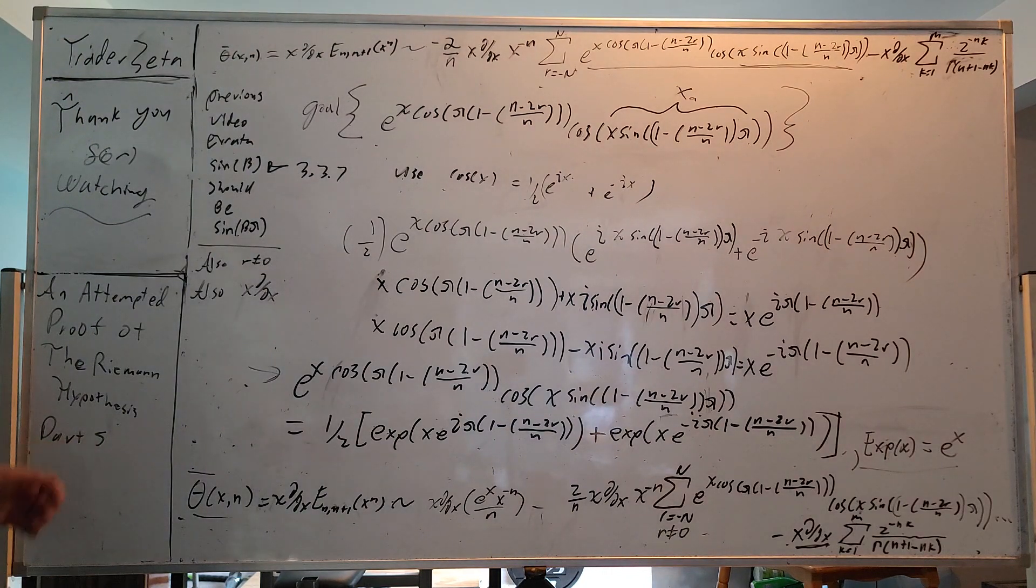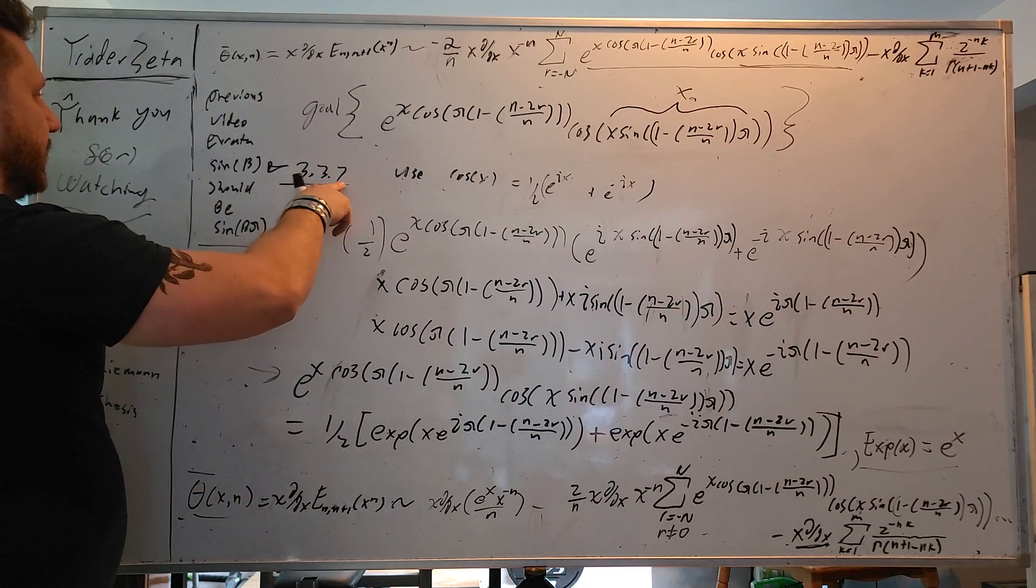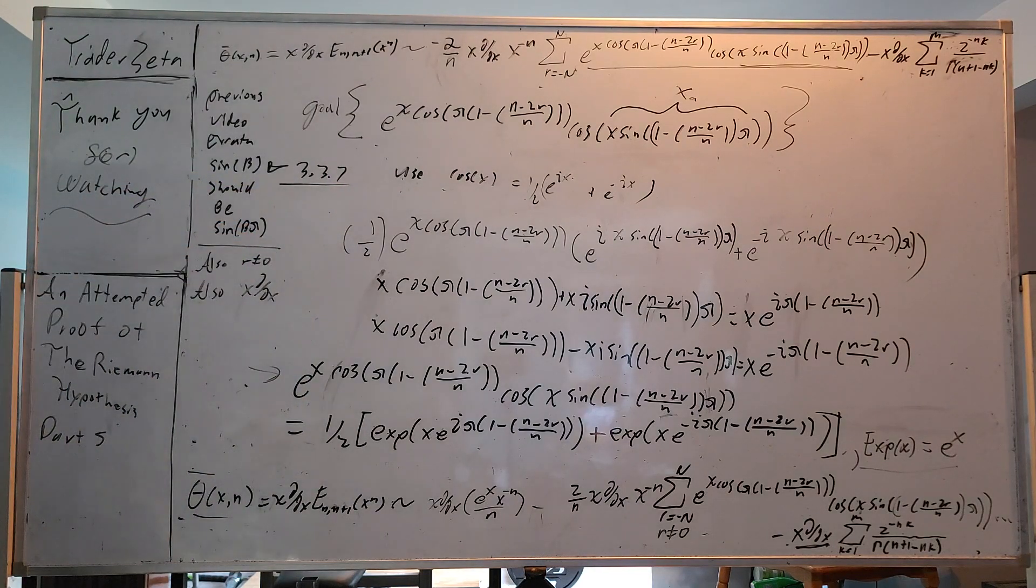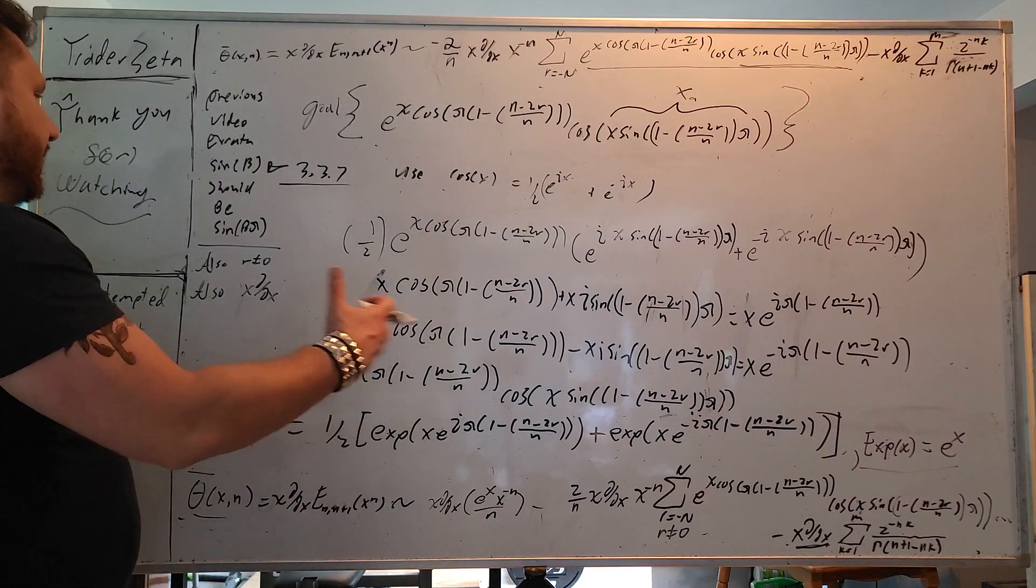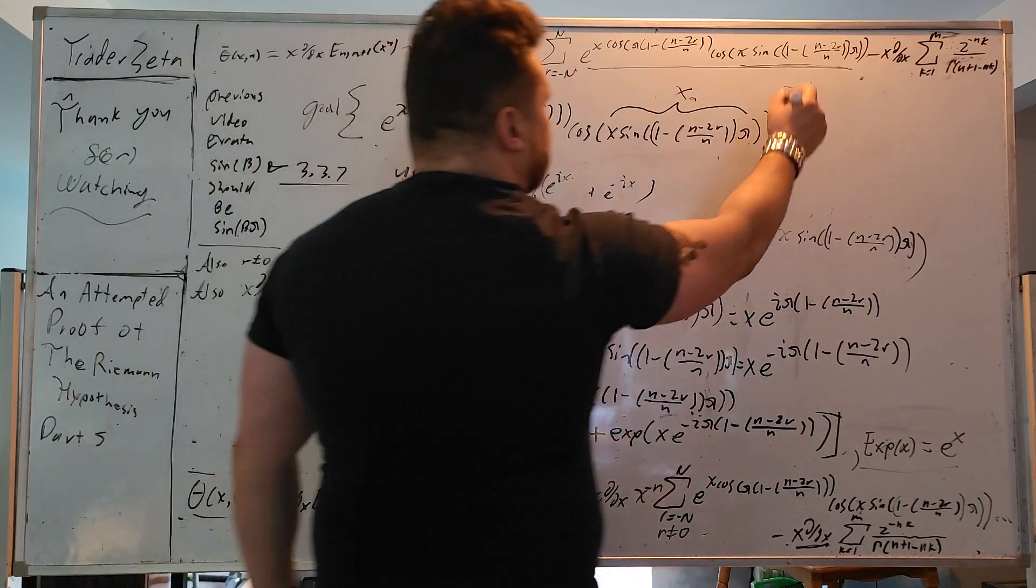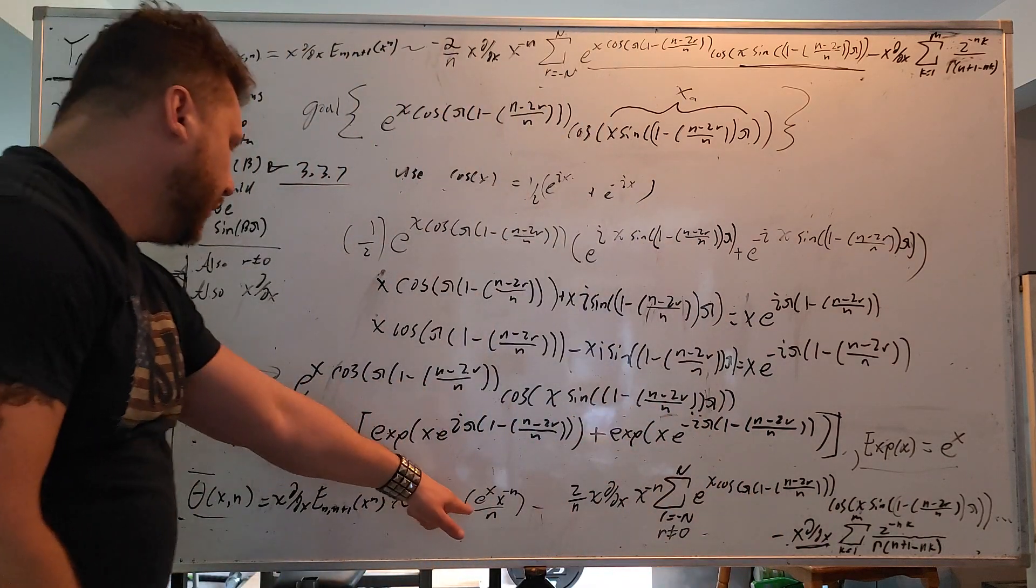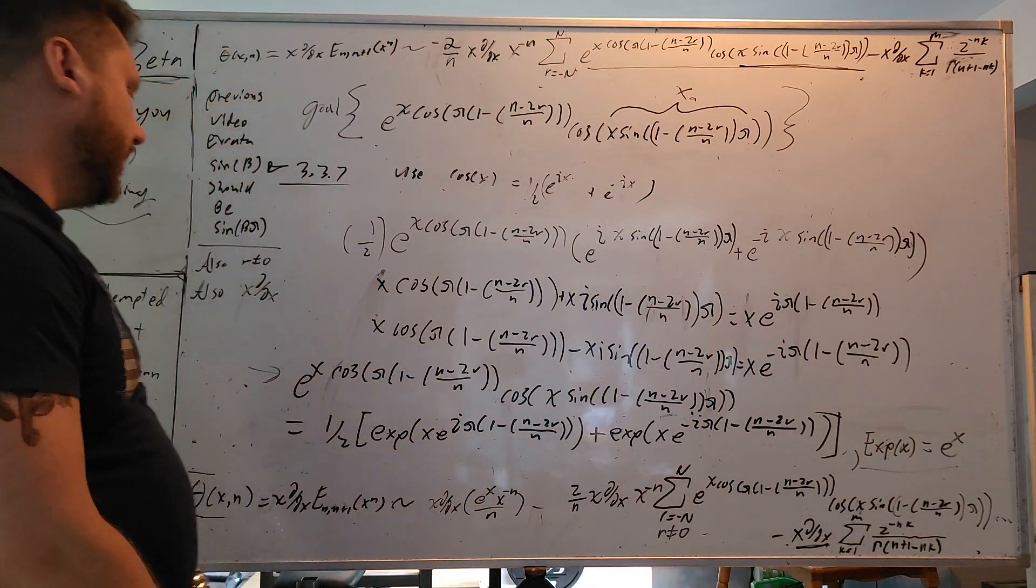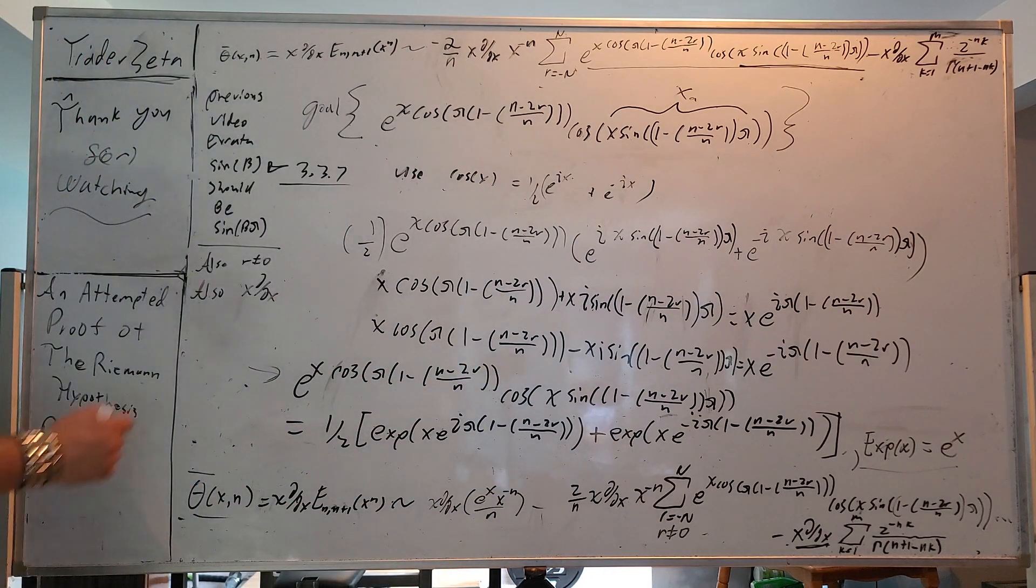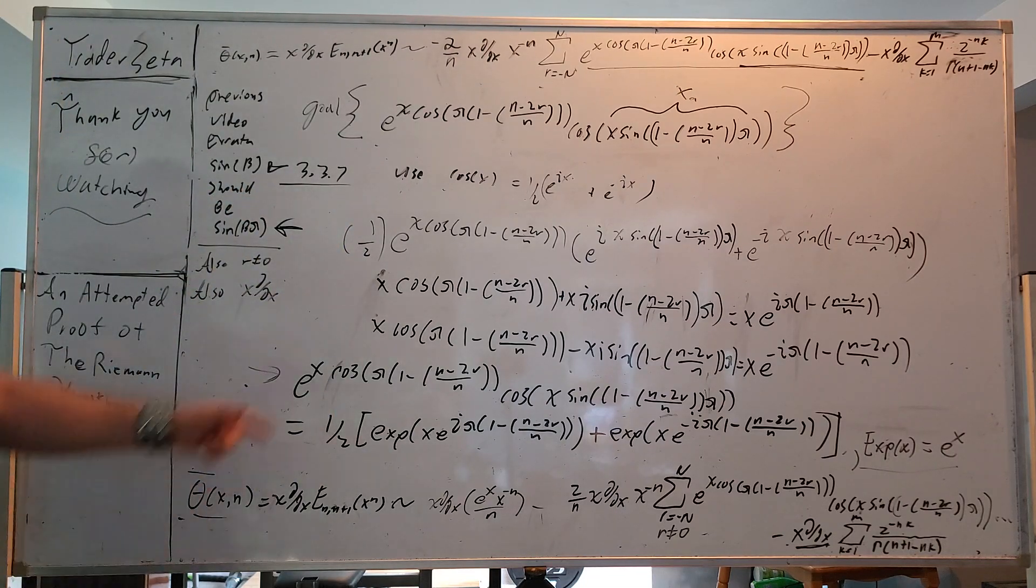And last little correction, previously in the last video I said 3.3.7 was sine beta, it's actually supposed to be sine beta pi. Luckily this is not a fatal error, so if you re-evaluate everything with just sine beta pi, actually everything works out just the same. You just have to add a pi right here, and because in this one you had sine of 0, it was totally okay because 0 times pi is still 0. So not a fatal error, but definitely needed to be corrected, especially for this next part.